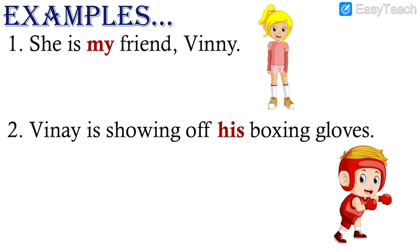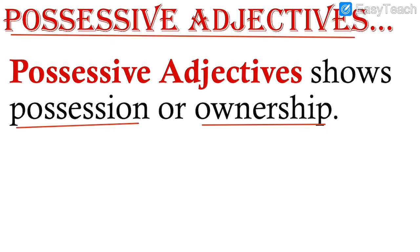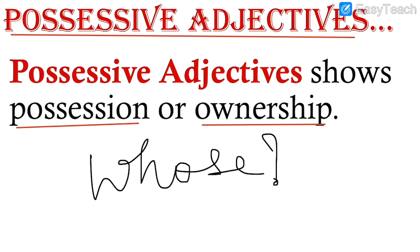See the example: she is my friend Vinnie. Here the word 'my' is highlighted and underlined. Whose friend is she? My friend. That shows ownership — whose friend is she, she is my friend. So 'my' is the possessive adjective here. The question you have to ask is W-H-O-S-E — 'whose.' You have to remember this question.